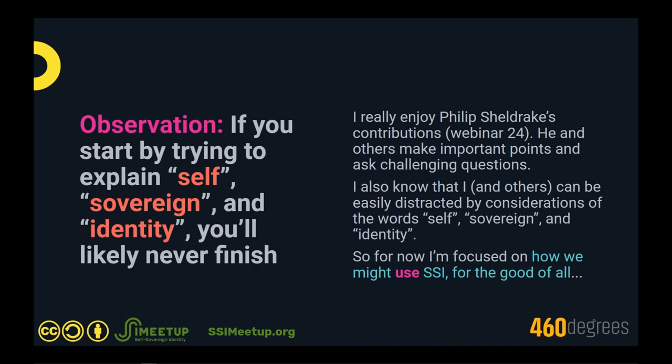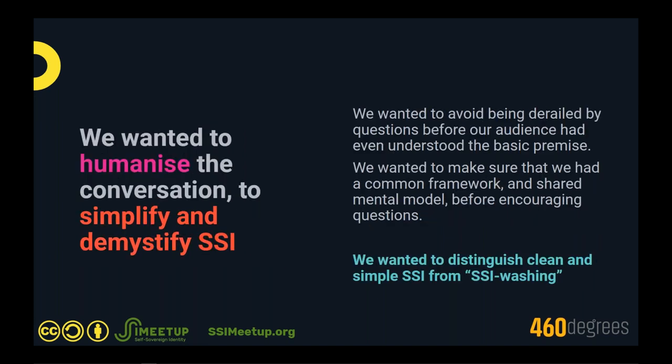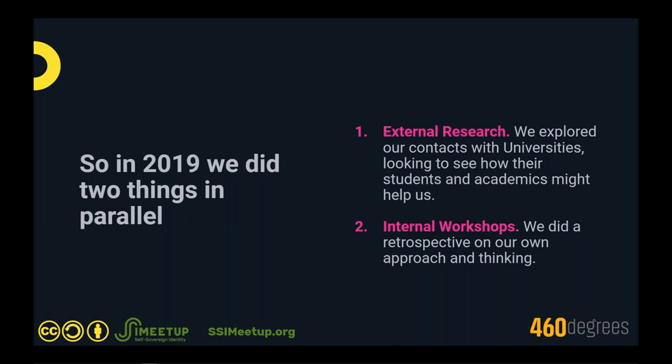When we talk about SSI in front of organizations we want to convince, we need to talk about the use of it for the good of all, rather than the meaning of the words self, sovereign, and identity. We saw all these issues as a need to humanize the conversation — simplify and demystify. We were getting derailed before we could get far into the discussion. We needed common understanding. Towards the end of 2019, some people we met would say they already knew about SSI, but you were never sure how much they knew or what their interpretation was.